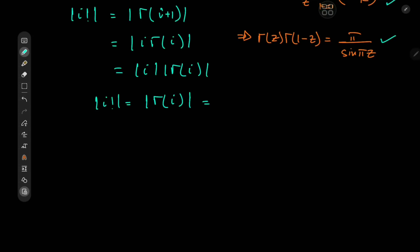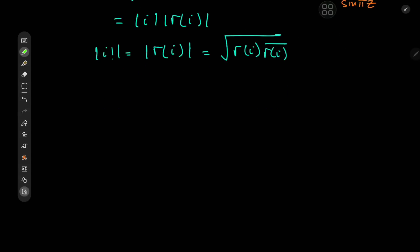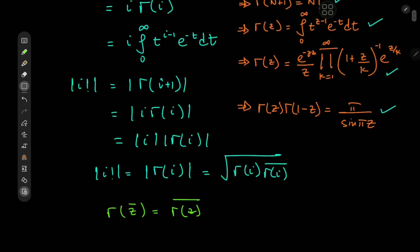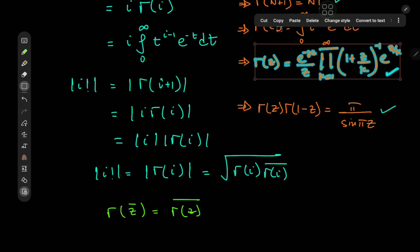We know that the absolute value of a complex number equals the square root of the complex number times its conjugate. So we have sqrt(gamma(i) times the complex conjugate of gamma(i)). This is nice to work with because for the gamma function, we have gamma(z̄) equal to the conjugate of gamma(z). It's easy to prove this using the Weierstrass representation for the gamma function, which I'm going to copy down here.